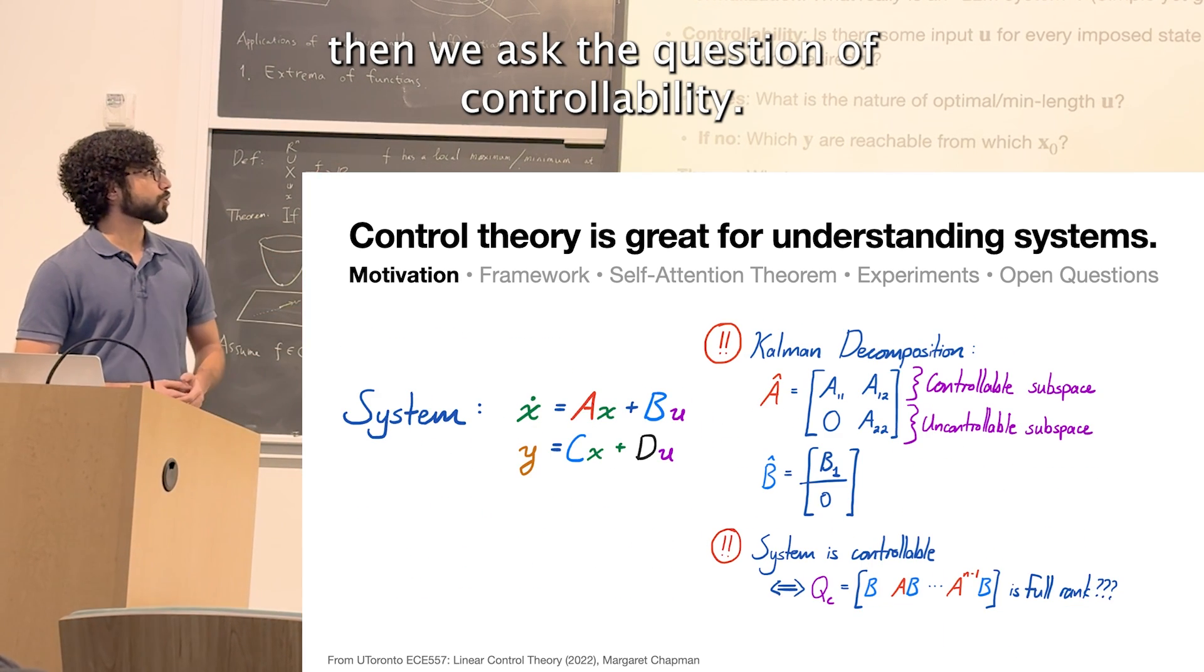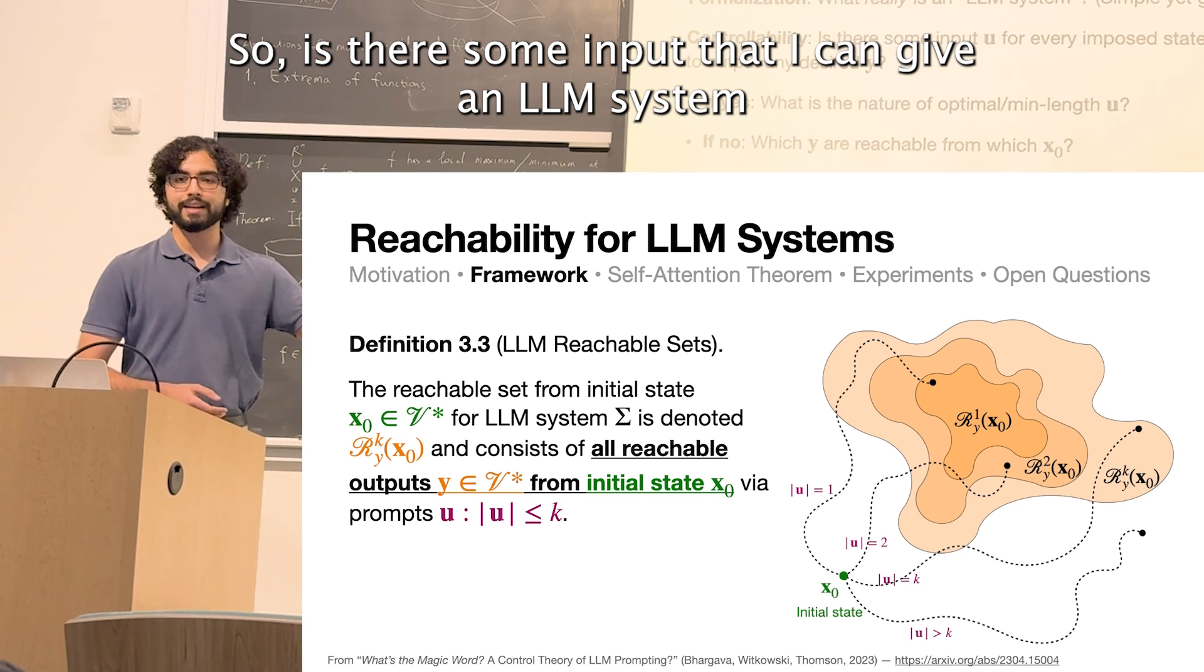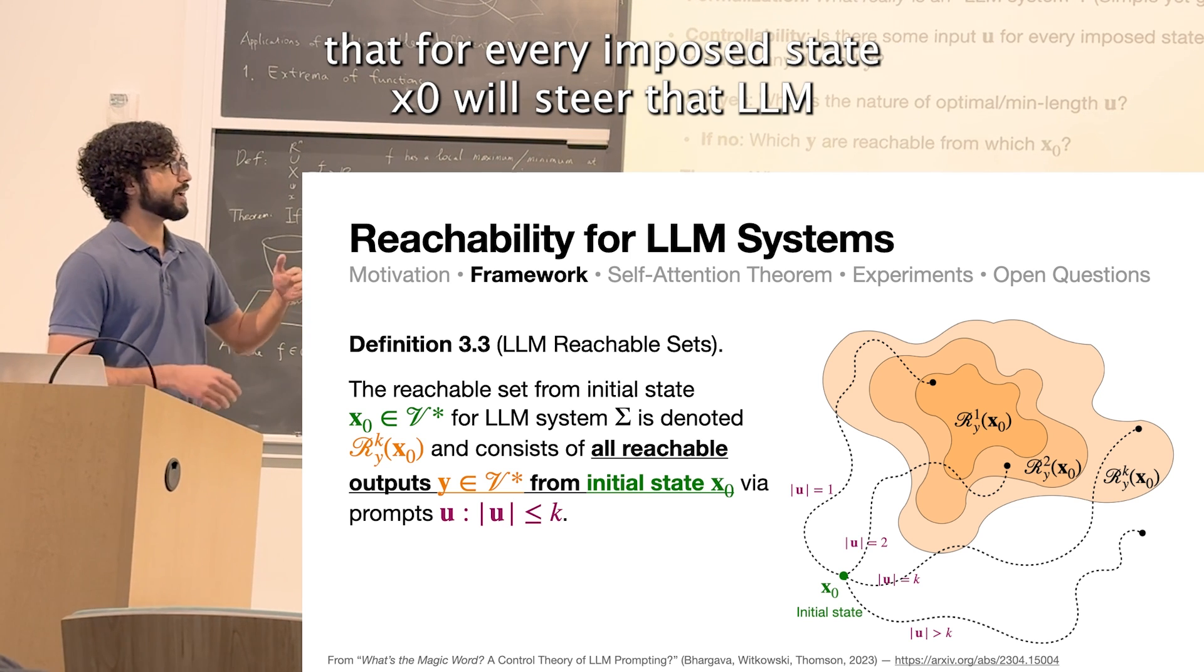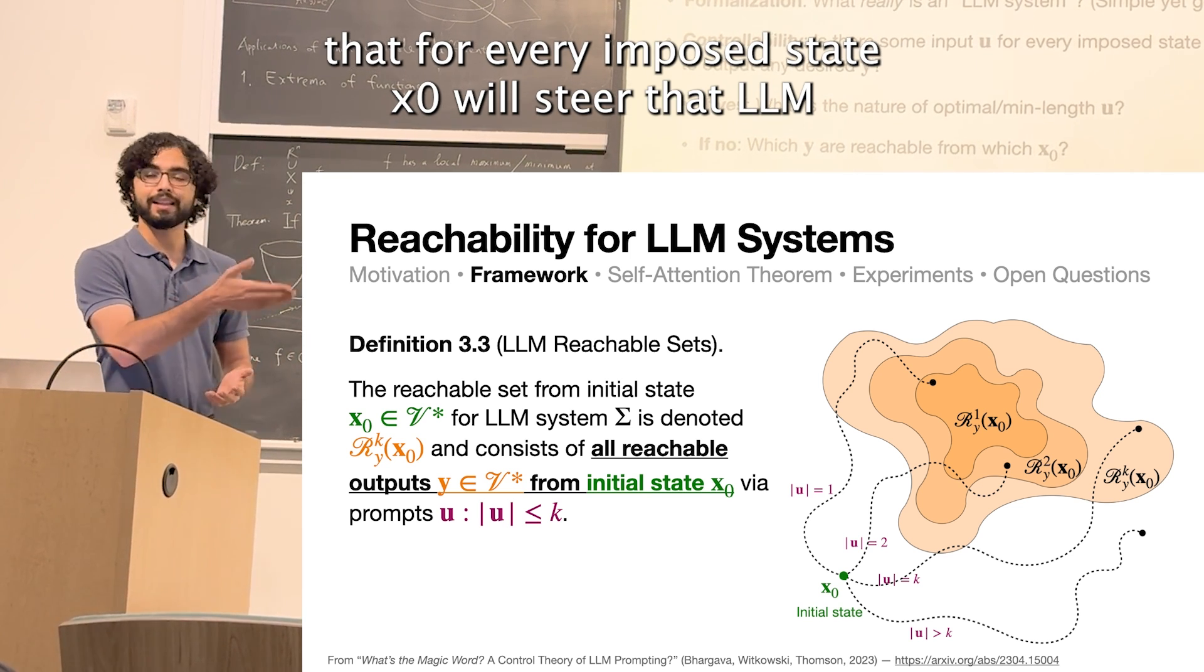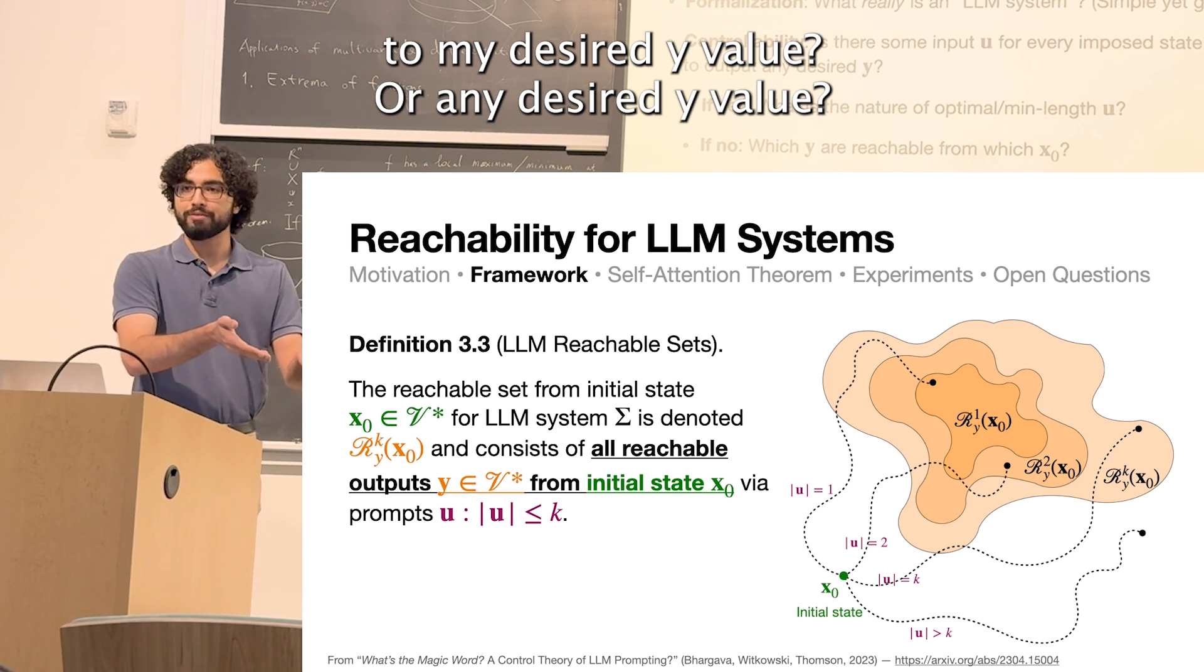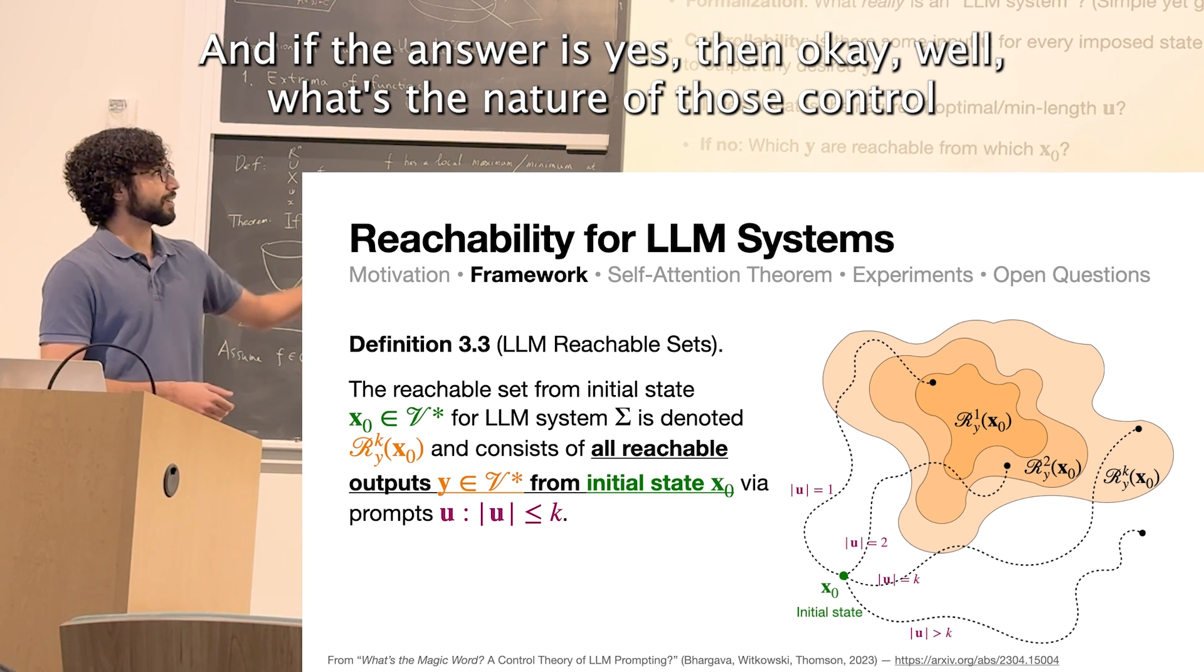Then we ask the question of controllability. So is there some input that I can give an LLM system that for every imposed state X0 will steer that LLM to my desired Y value or any desired Y value? And if the answer is yes, then okay, well,